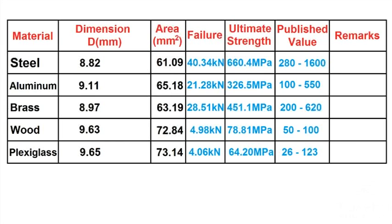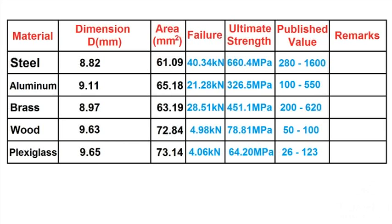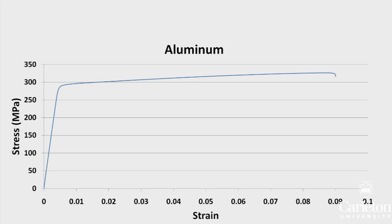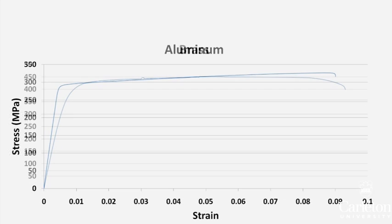Published values should be represented as a range with a minimum and a maximum. From the data gathered by the machine, we can plot stress against strain. Here is the stress versus strain relationship for steel, aluminum, and brass.